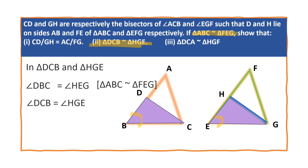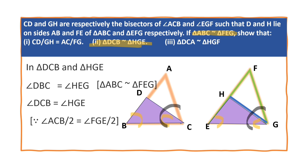And angle DCB is equal to angle HGE. Why? Because we know that angle C is equal to angle G. Angle ACB by 2 is equal to angle FGE by 2. So according to the angle-angle criterion, triangle DCB is similar to triangle HGE, because of angle-angle criterion.